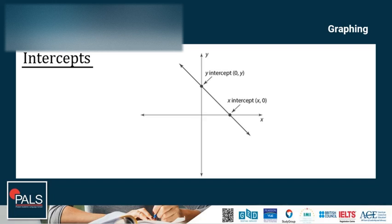Now let's proceed to intercepts. Intercepts are the points where the line passes through the X and Y axes. If it passes through the X-axis, we call it the X-intercept, where Y = 0. If the line passes through the Y-axis, it is called the Y-intercept, where X = 0.